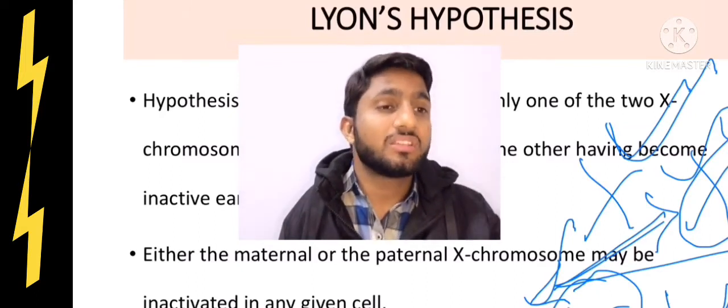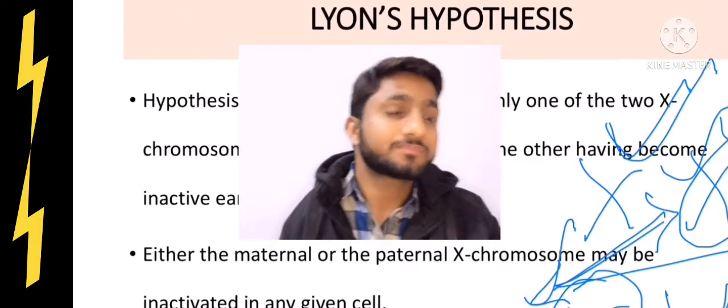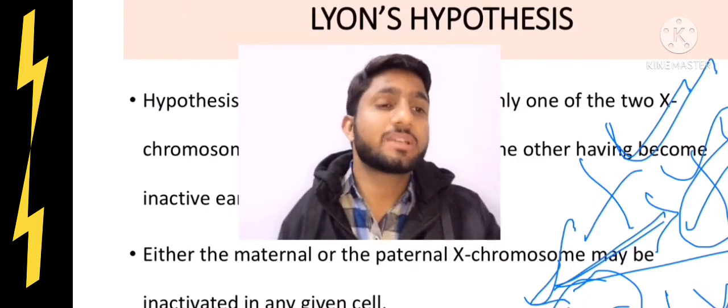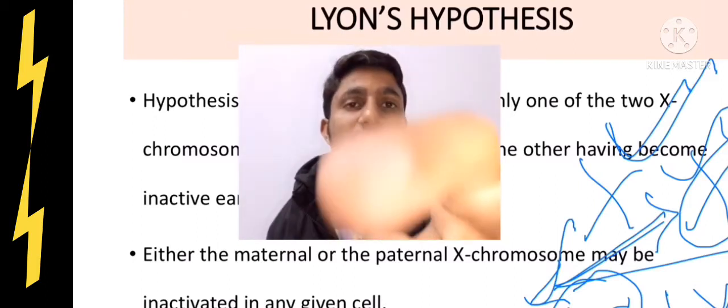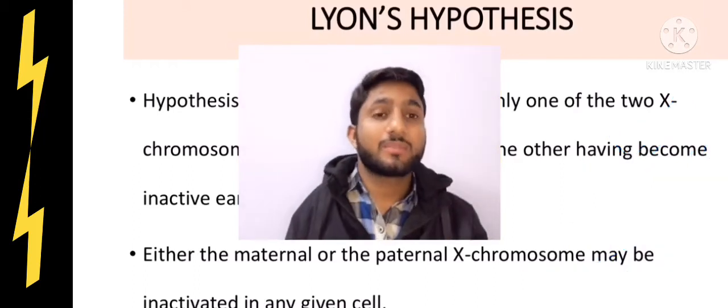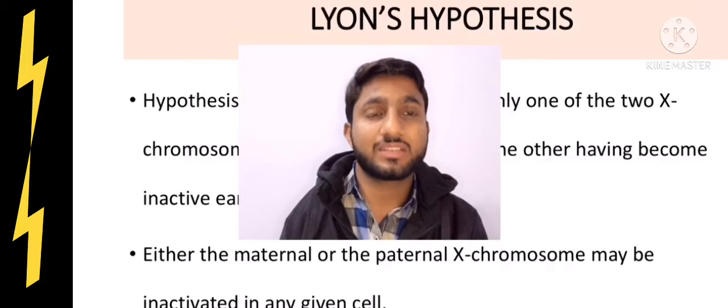The offspring could be a daughter. In case if there is X and Y, we can say genes will be more expressed and the offspring would be a son. These are some possibilities. Barr body formation is sometimes helpful for the determination of sex, as I already explained.